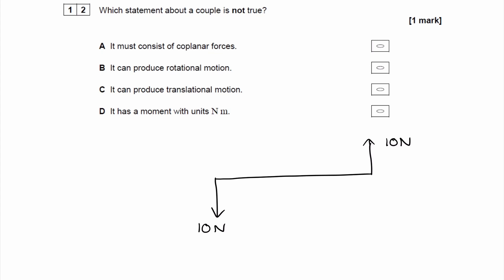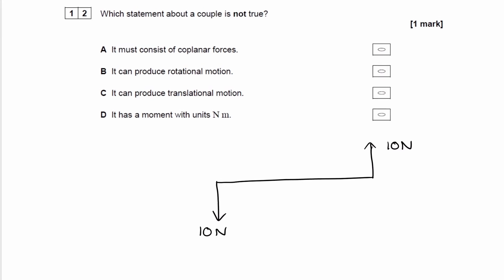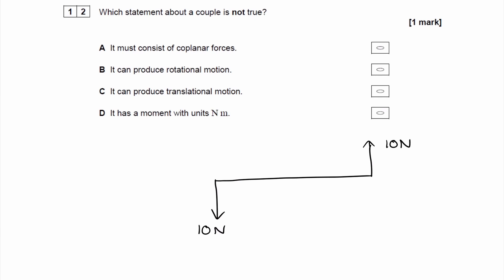For option C, it says it can produce translational motion. Well, what is translational motion? Translational motion is when the center of mass of an object moves from one point to another. So let's say the center of mass is over here, right in the middle. So with these two forces, will the center of mass move from this point to, let's say, over here? If it does, or if it can, then this couple can produce translational motion.